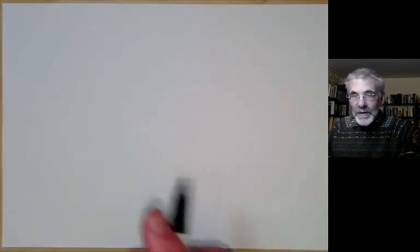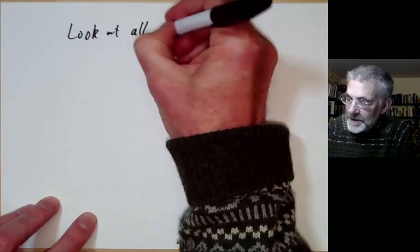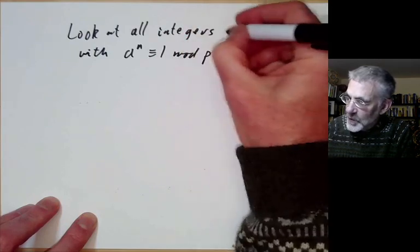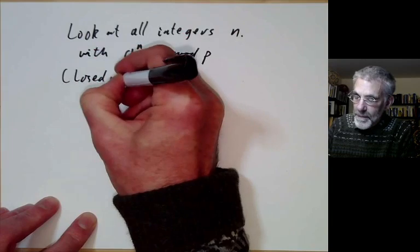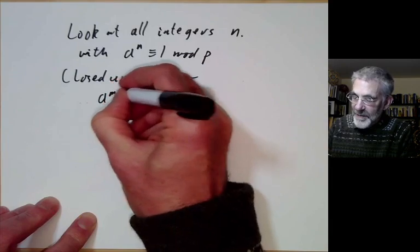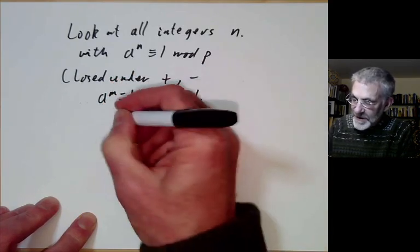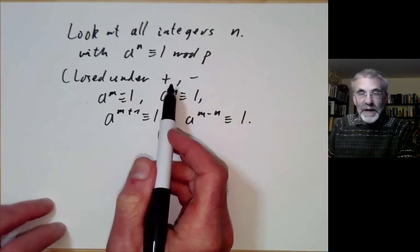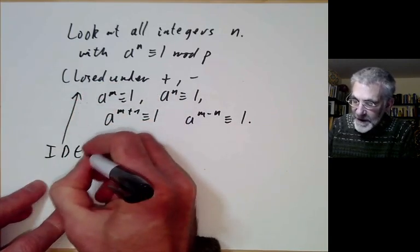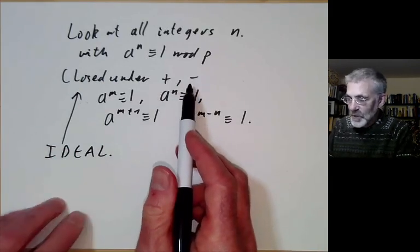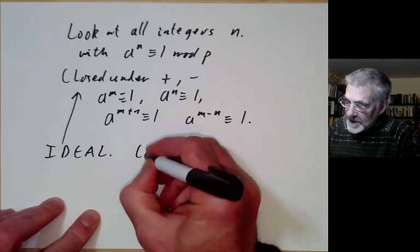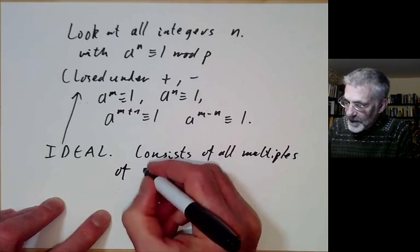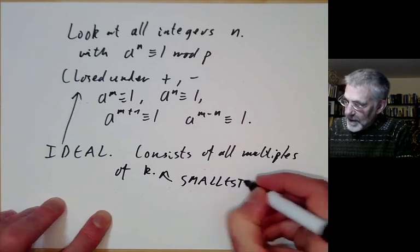Now let's look at all integers n such that a to the n is congruent to 1 modulo p. We notice this set is closed under addition and subtraction: if a to the m ≡ 1 and a to the n ≡ 1, then a to the m+n ≡ 1 and a to the m−n ≡ 1. So since it's closed under addition and subtraction, it forms an ideal of the integers. Any subset of the integers closed under addition and subtraction is called an ideal, and all ideals consist of all multiples of some number k, where k is the smallest element of the ideal.